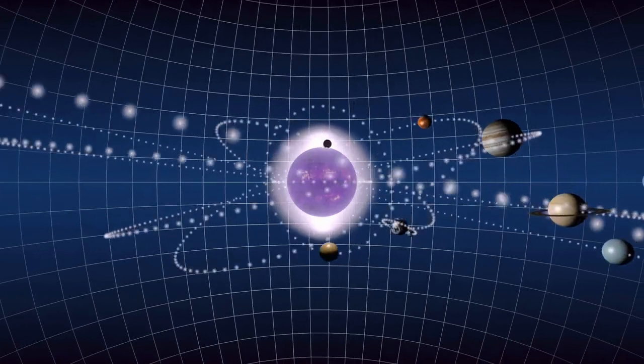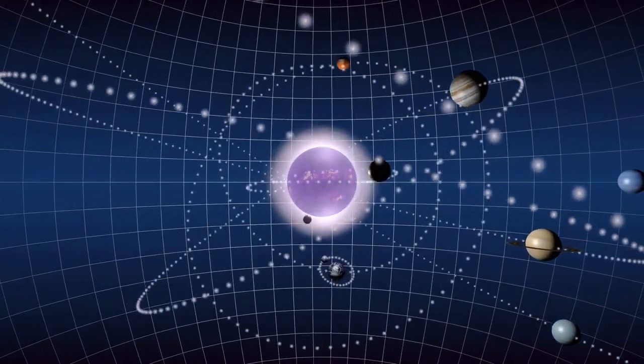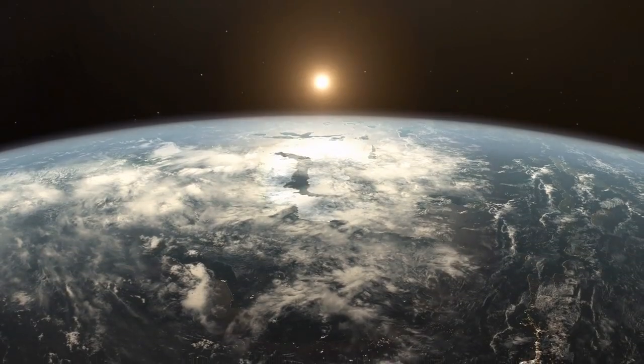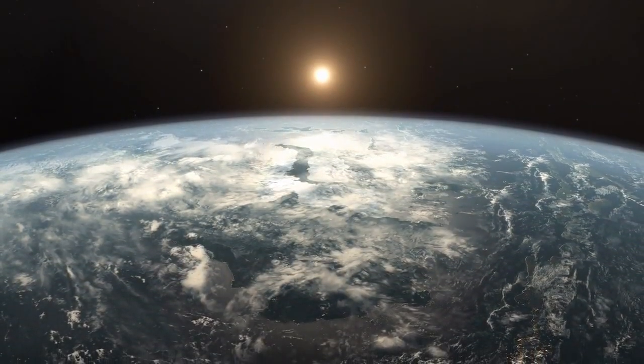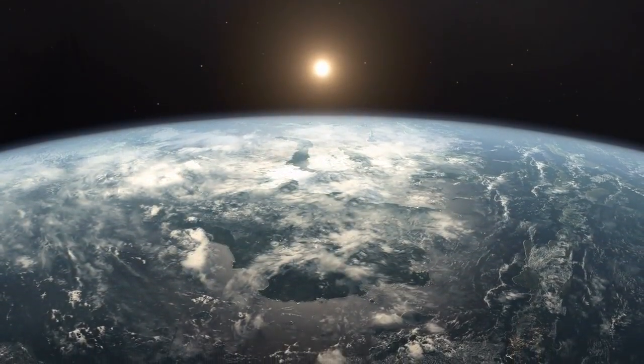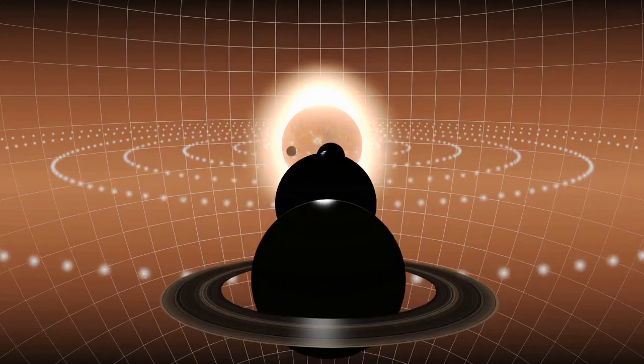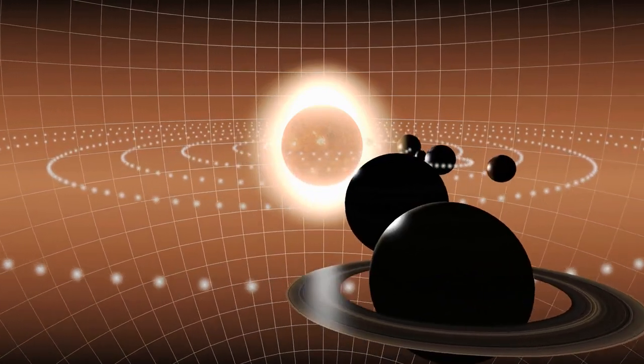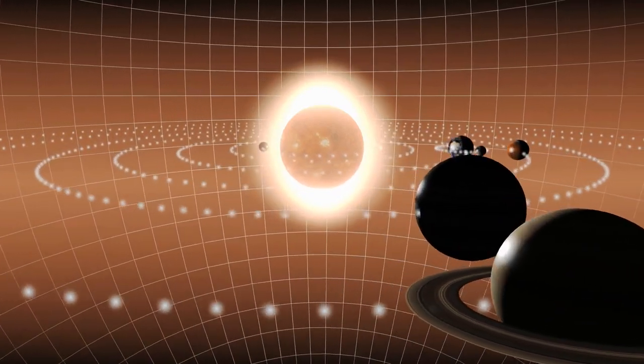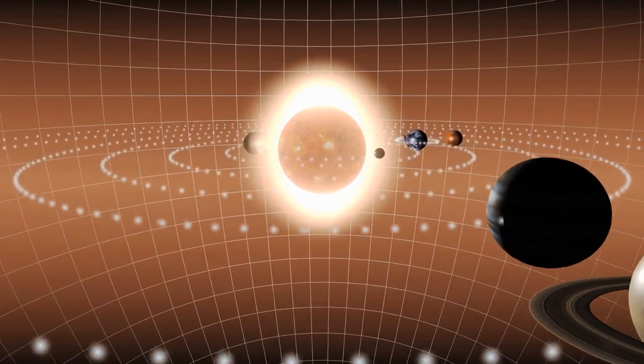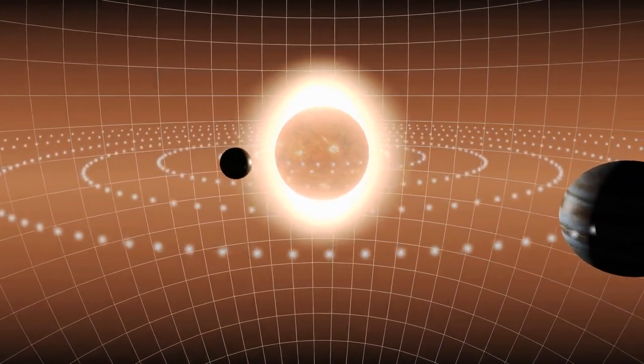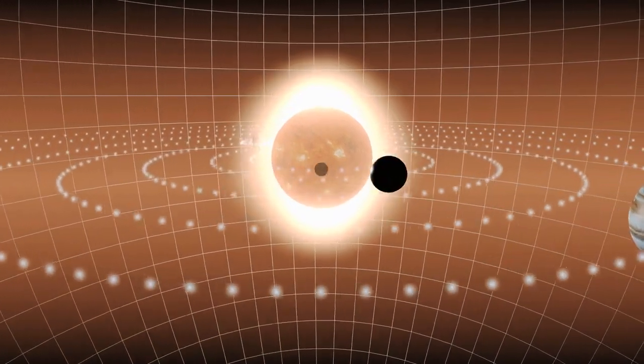To understand these cosmic threats, let's start with rogue planets. Unlike Earth, which orbits the Sun in a stable path, rogue planets don't orbit a star at all. They have been ejected from their original solar systems due to chaotic gravitational interactions, violent collisions, or other cataclysmic events.